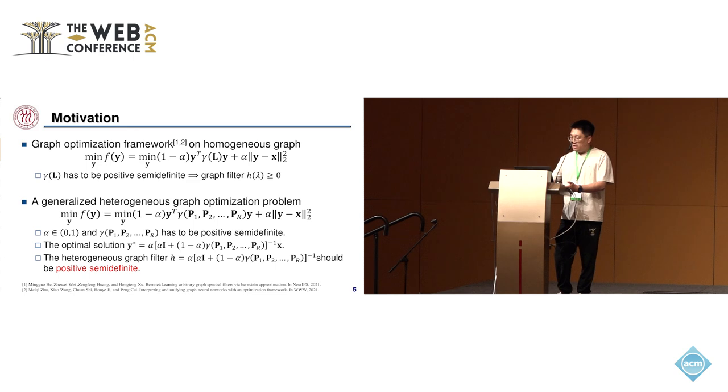On the other hand, according to the polynomial optimization framework defined on homogeneous graphs, there are some constraints for the graph filter. Specifically, in the optimization problem, energy function gamma of L must be positive semidefinite to ensure the function f of y squared is convex.